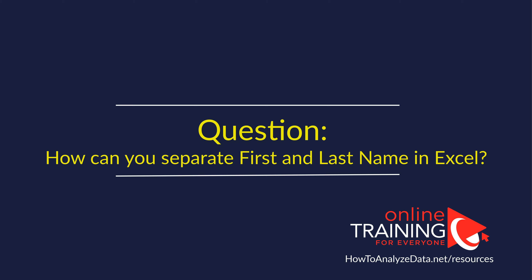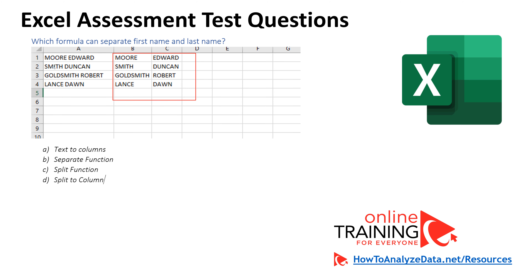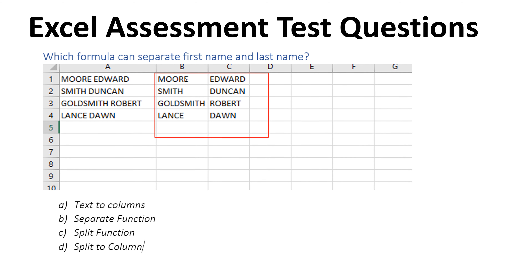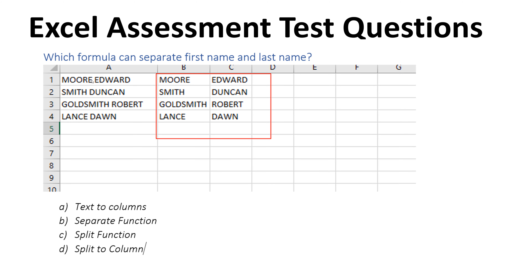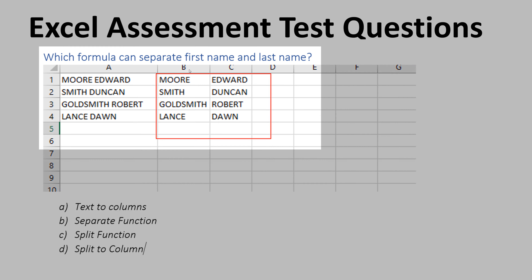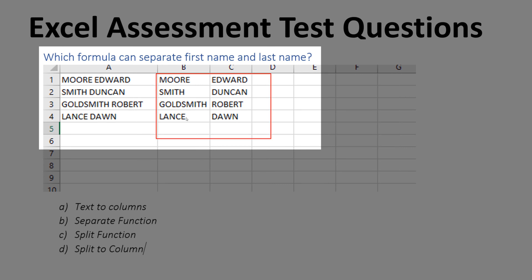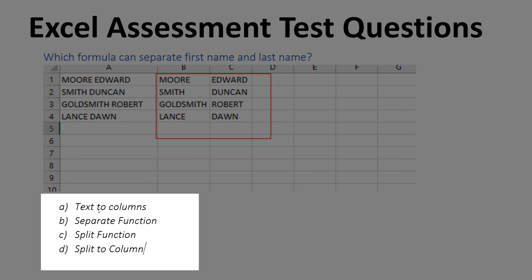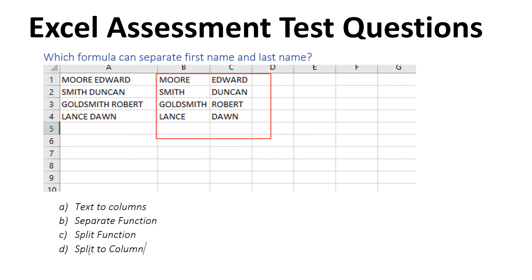A lot of times when you work with data from another source, you may need to separate data into separate columns. For example, here we see a combination of first and last name in column A, but in columns B and C you see these values as separate values. Which Excel function would you use? You're presented with four choices: text to column, separate function, split function, and split to column. Which one would you choose?